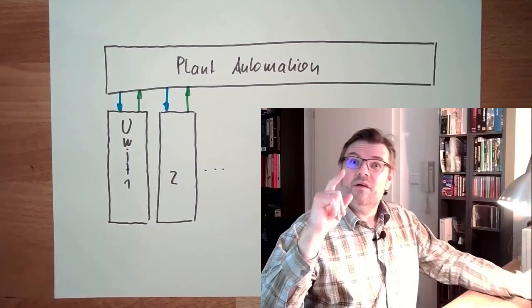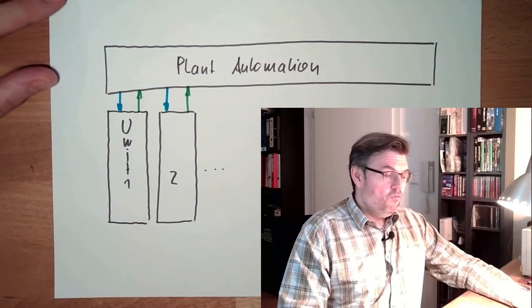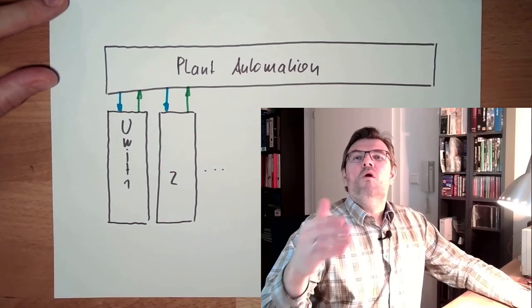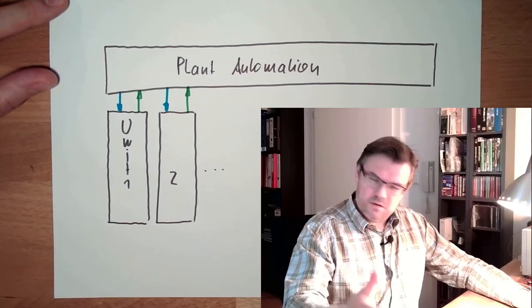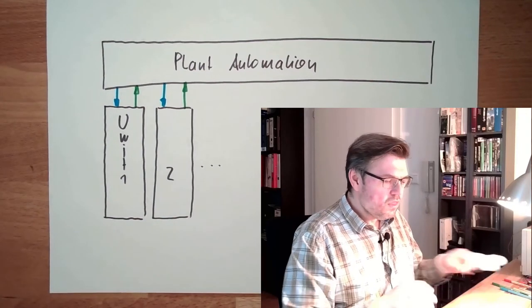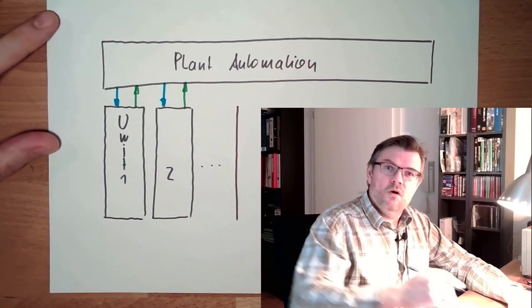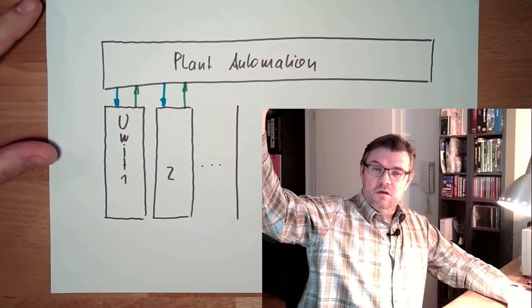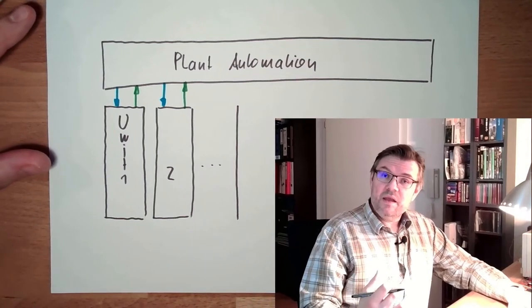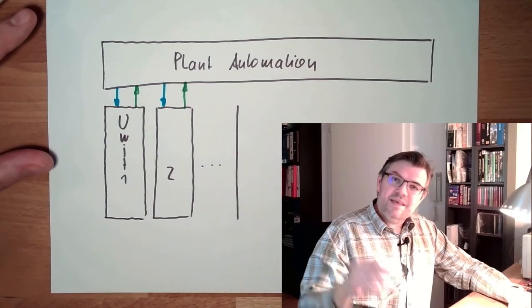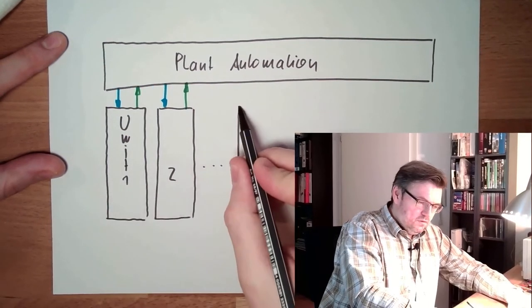And then there are systems which are unique in a power plant. For instance, the water reservoir is something like this, the waterways. Water reservoir, it is somehow unique. Usually, you only have one reservoir and you have one pressure line, one penstock line, and then distribute this in the powerhouse to the different units. So the waterways.